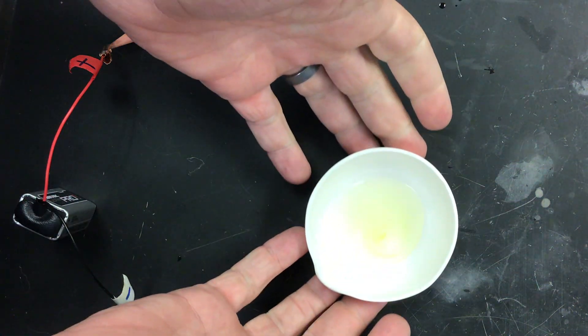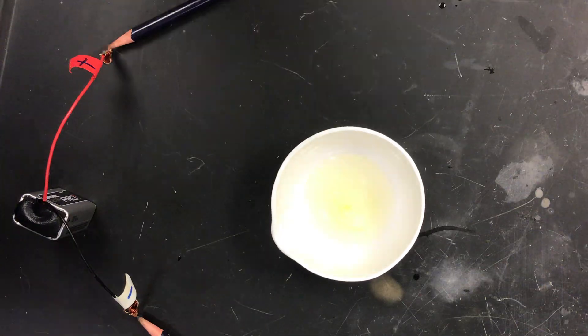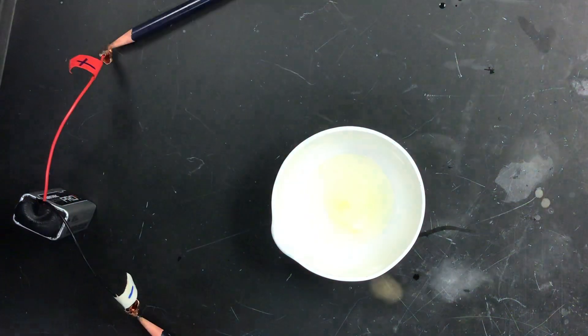All right, so here we've got a re-dissolved zinc iodide product. We've added some acidified water, gotten those crystals to dissolve back in, so now our zinc ions, our Zn²⁺ ions, are floating around with our I⁻ ions.